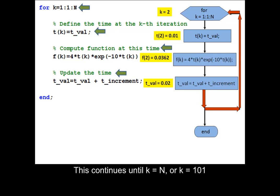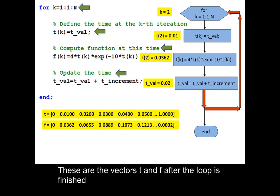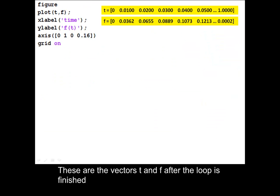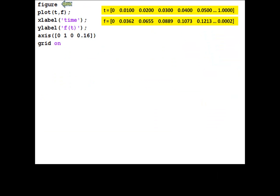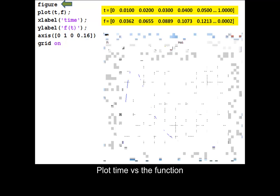This continues until k equals n, or k equals 101. These are the vectors t and f after the loop is finished. Plot time versus the function.